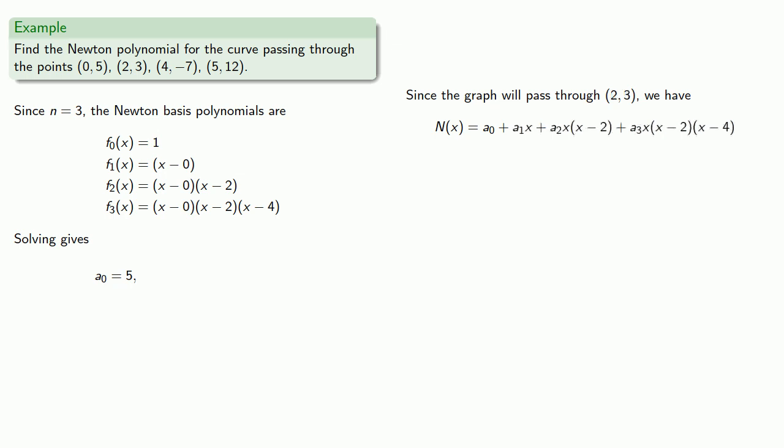Since the graph passes through (2, 3), then if x is equal to 2, N(x) is equal to 3. And again, these last two terms have a factor of x minus 2. So when x is equal to 2, they'll vanish. And we already know the value of a0. And so in the resulting equation, the only unknown we have is going to be a1. And so we can solve for it.